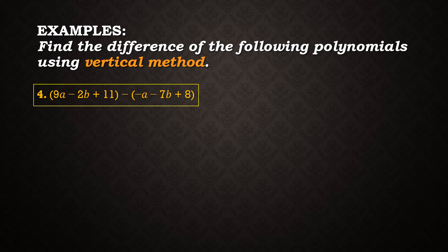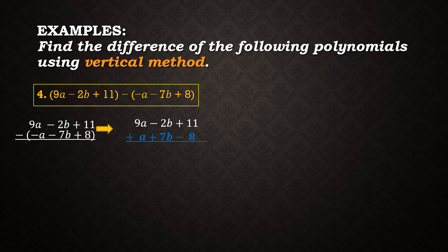For example number 4, we have the quantity 9a minus 2b plus 11 minus the quantity negative a minus 7b plus 8. Let us align them vertically and rewrite, so we have 9a minus 2b plus 11 plus positive a plus 7b minus 8. Then we add: 9a plus 1a is equal to 10a. Negative 2b plus 7b is equal to 5b. And 11 plus negative 8 is equal to positive 3. So our final answer for example number 4 is 10a plus 5b plus 3.